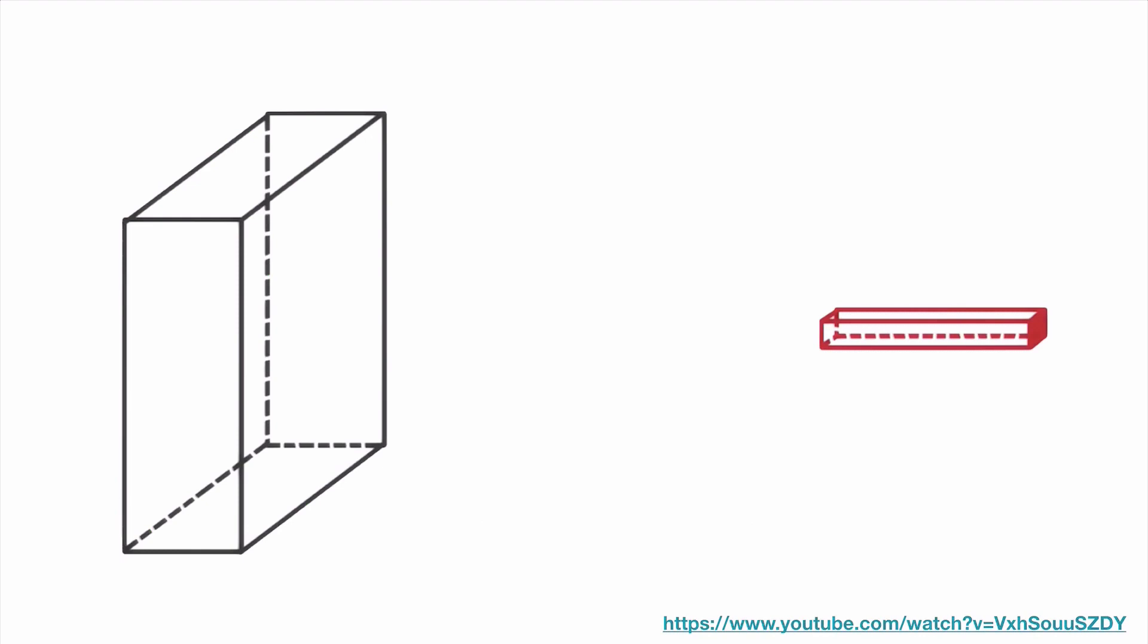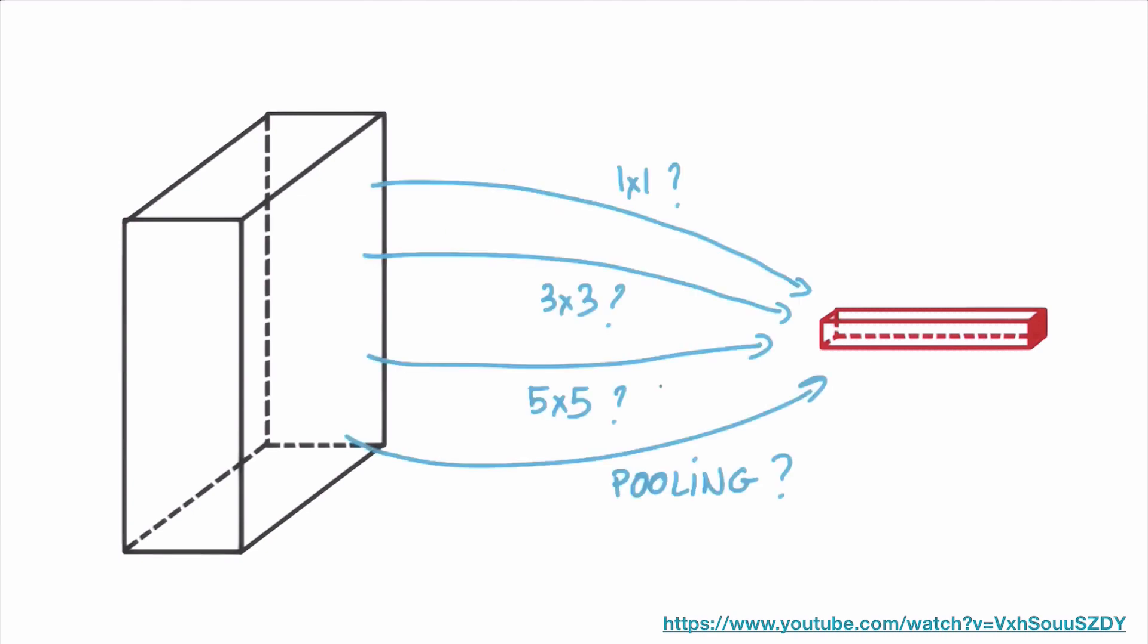For a given image, it's natural that we can use a filter and then try to extract some output. However, we can use different size of filters: 1x1, 3x3, 5x5 for example. So which one we have to use for a given image? This is really a big question mark.